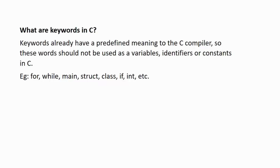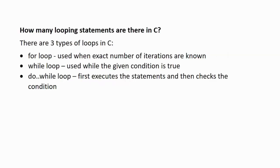Next question: what are keywords in C? Keywords already have a predefined meaning to the C compiler. These words with predefined meaning are known as keywords, and they should not be used as variables, identifiers, or constants in C. Since they already have meaning with the compiler, they cannot be redefined. For example, FOR is a loop keyword — we cannot declare a variable like INT FOR, as that would confuse the compiler. Other keywords include WHILE, MAIN, STRUCT, CLASS, IF, INT, and so on. There are around 32 keywords in C.